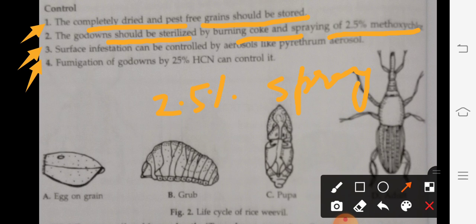Third: the surface infestation can be controlled by aerosols like pyrethrum aerosols. We can remove the surface infestation from the grain.